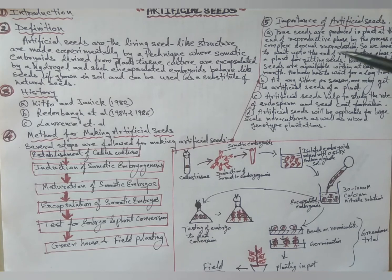But artificial seeds are available within at least one month. Nobody has to wait for a long time.